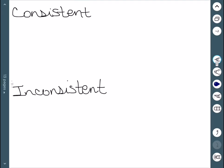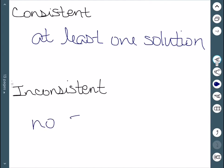A couple of definitions. Consistent means we have at least one solution, so either one or infinitely many. Inconsistent would be no solutions.